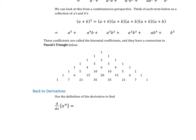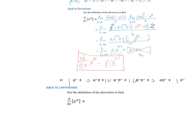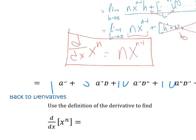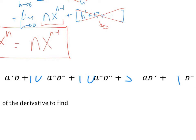The binomial theorem gives us coefficients. For a plus b squared, the coefficients are 1, 2, 1 — giving 1a squared plus 2ab plus 1b squared. For a plus b to the seventh, the exponents on a go down and the exponents on b go up: a to the seventh, then a to the sixth times b to the first, then a to the fifth times b squared, a to the fourth times b cubed, and so on, continuing the pattern until we have all our terms.